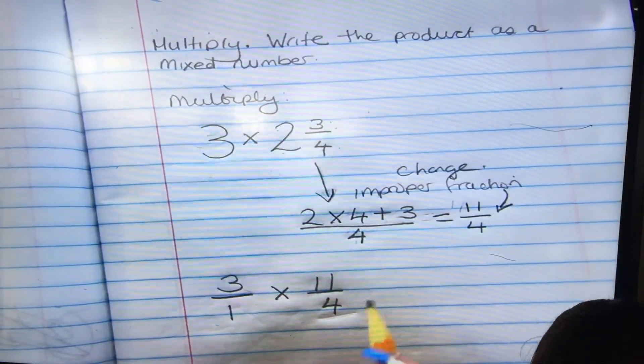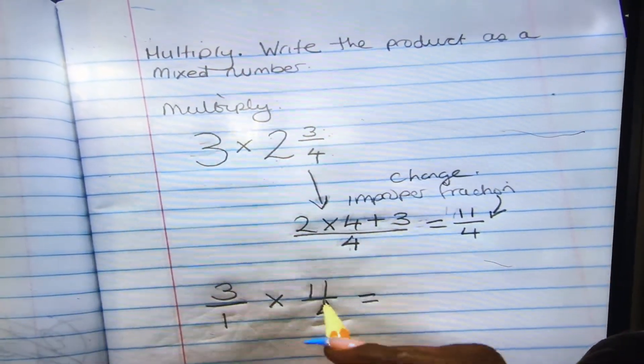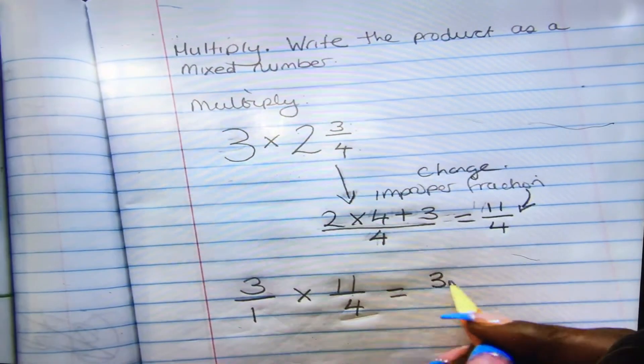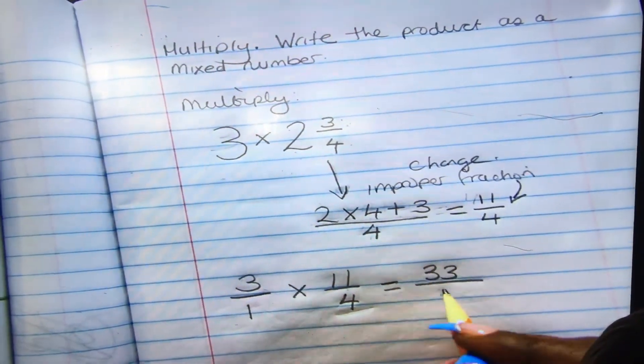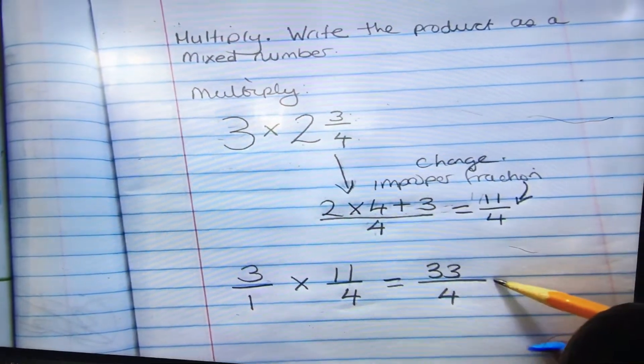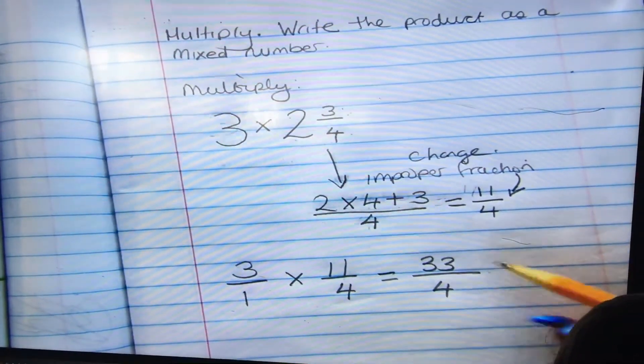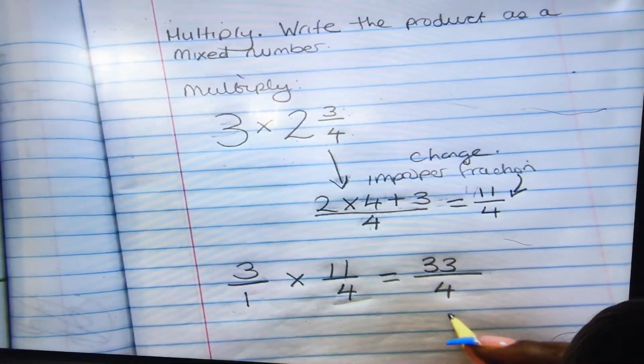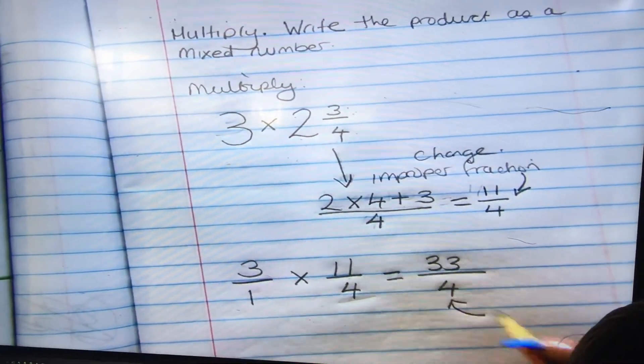Now we've got 3 over 1 times 11 over 4. What do we do then? We multiply across. So 3 times 11 is 33 over 4. Absolutely, very good guys. Now this is called an improper fraction and we're going to change it to a mixed number, which is what they asked us to do.